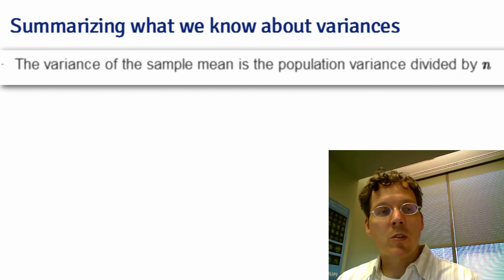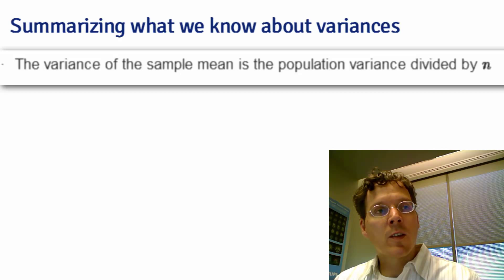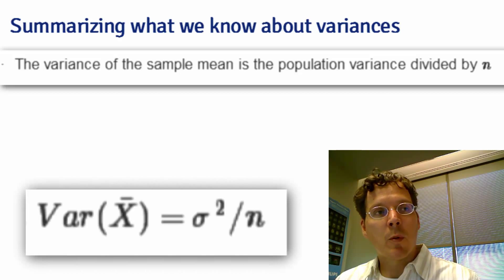We also know a lot about the distribution of sample means. We know where they're centered at from the last lecture, but we also know in this lecture that the variance of the sample mean is the population variance divided by n.